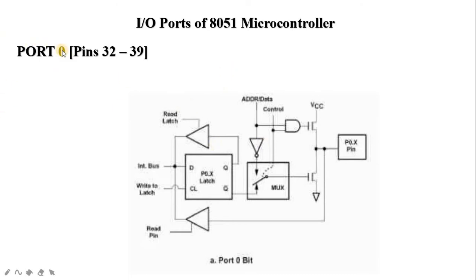Each port has 8 pins, so the 4 ports jointly comprise 32 pins. All ports are bi-directional. They are constructed with a D-type output latch, output drivers, and input buffers. We can modify their functions using software and hardware connected to the microprocessor. To configure a port as an input port, 1 must be written to that port; to configure it as an output port, 0 must be written to it.